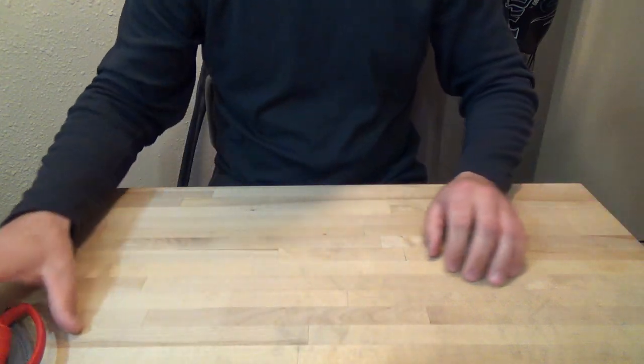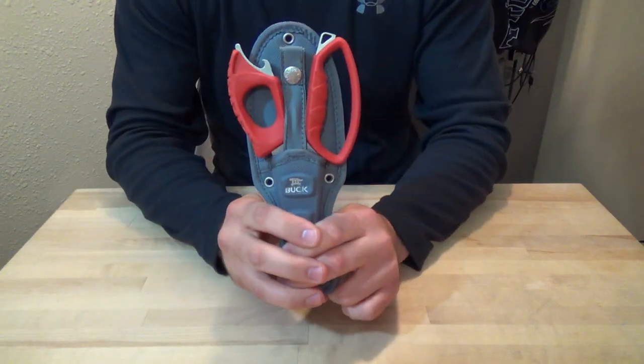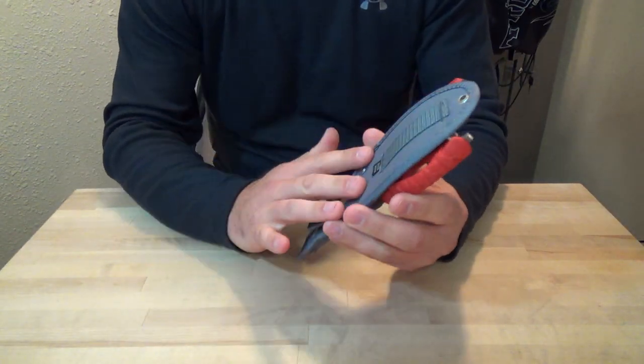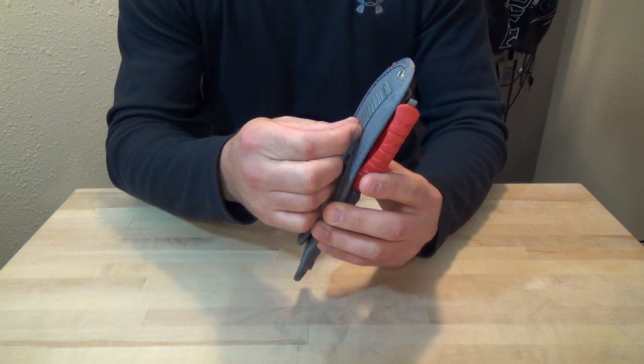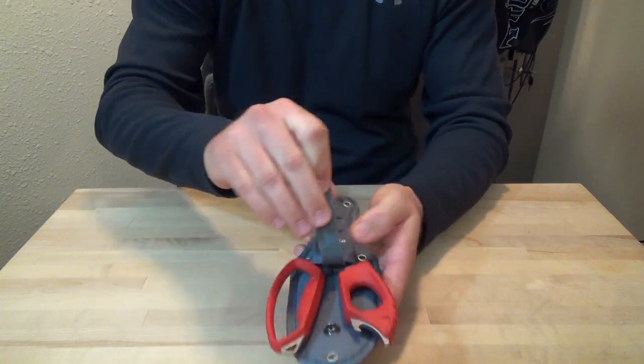Next up, we have the Buck Splizzers, which is a fishing multi-tool. It comes in a really nice sheath. Again, there's a spot there to run your belt through. There's a clip on the front to hold it in place.